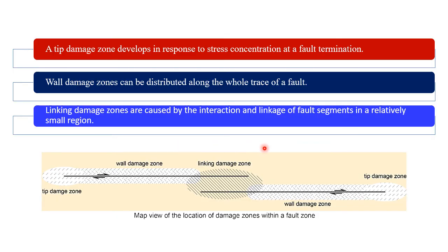Damage zones are classified into tip, wall, and linkage damage zones based on position within and around the fault zone. A tip damage zone develops in response to stress concentration at fault termination. A wall damage zone can be distributed along the whole trace of a fault, representing either tip damage zones abandoned as the fault propagated, or wall rock deformation associated with the build-up of slip. Linkage damage zones are caused by the interaction and linkage of fault segments in a relatively small region.